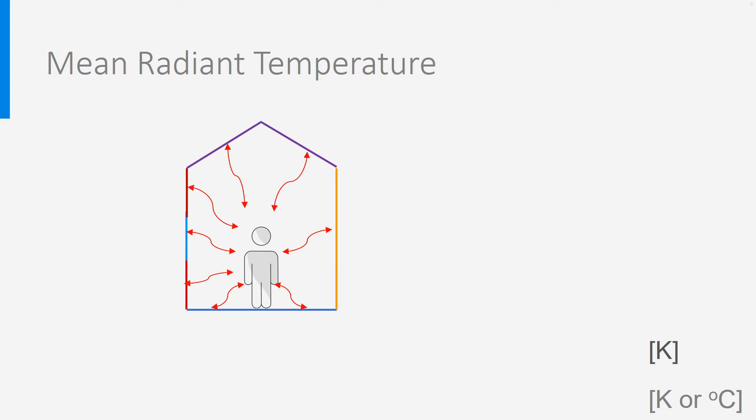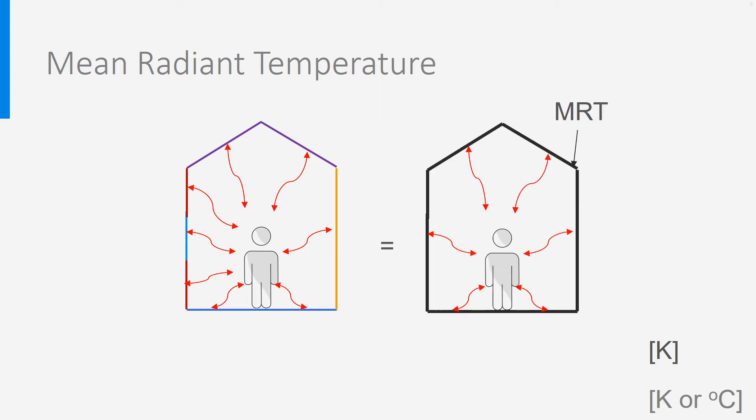In order to simplify comfort calculations and to get a better insight into what happens, it is most convenient to work with an average surface temperature of the room instead of with the temperatures of all separate surfaces. The average surface temperature of the room is called the mean radiant temperature. The room is often referred to as the enclosure. The exact definition of the MRT is that it is the equivalent uniform temperature of a black enclosure in which the occupant would exchange the same amount of radiant heat as in the actual non-uniform enclosure.